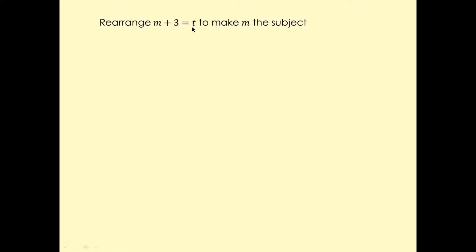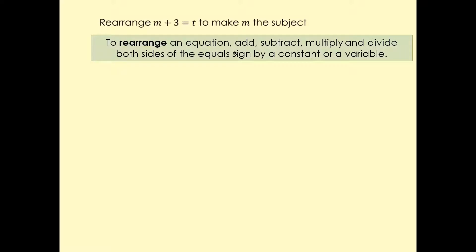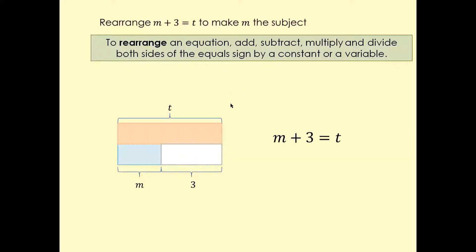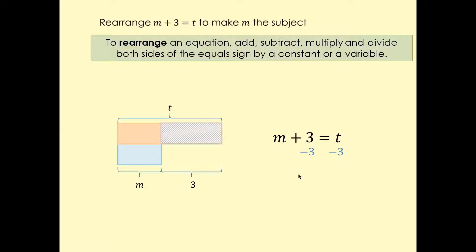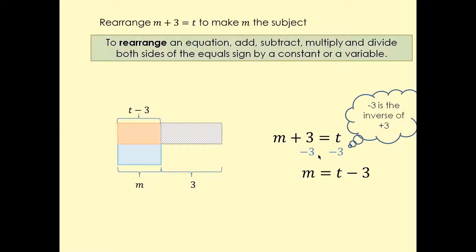So M plus three equals T and we want to make M the subject of this formula. To rearrange, you add and subtract or multiply and divide both sides of the equal sign by a constant or variable. What we have to do is move plus three to the other side, and when you move plus three to the other side it becomes minus three. So do minus three on both sides — the plus three and minus three cancel.